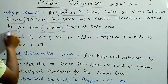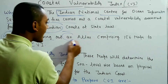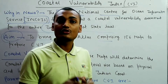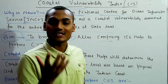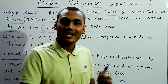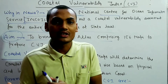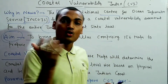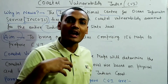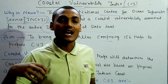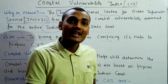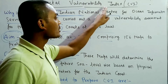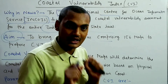The main aim is to bring out an atlas comprising 156 maps, providing accurate data about coastal vulnerability — since coastal areas can sometimes be affected by tidal effects, tsunamis, and floods, especially in regions like Odisha, West Bengal, Karnataka, and Kerala.